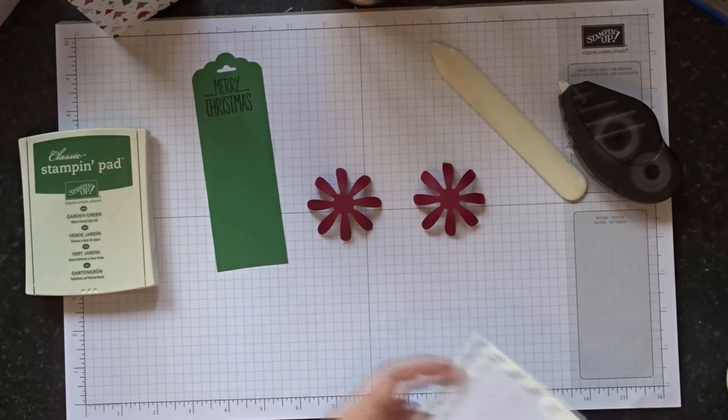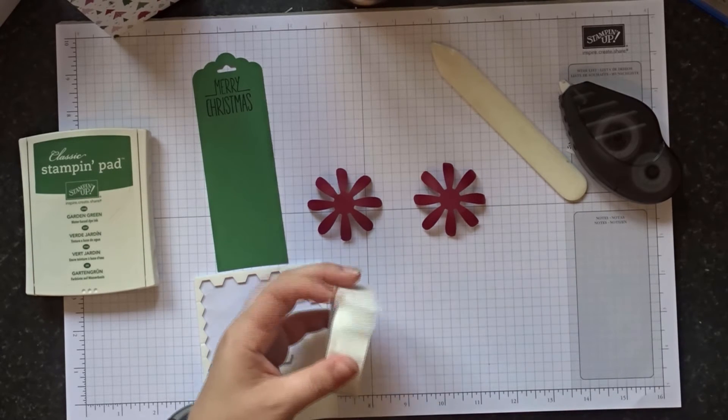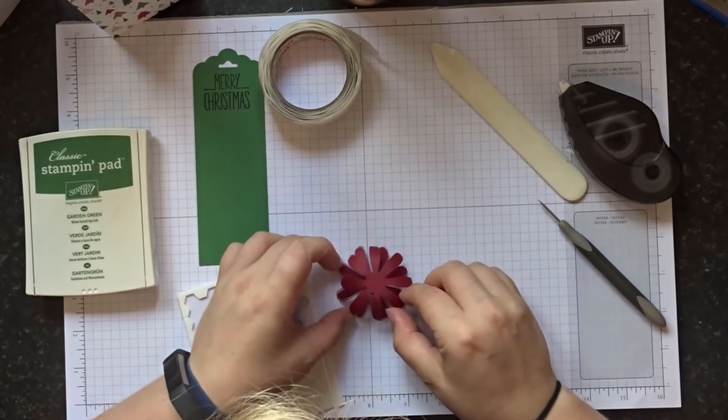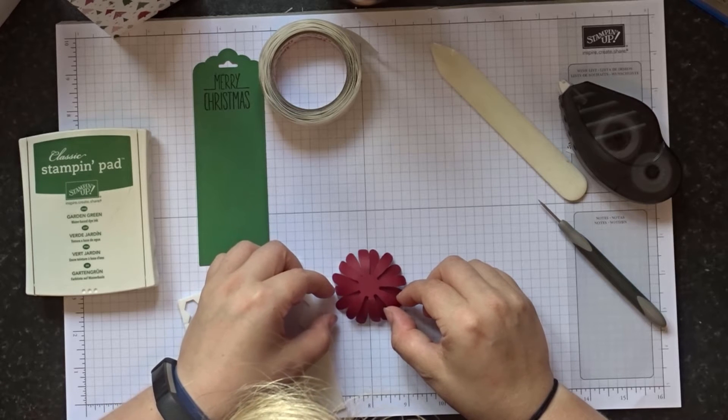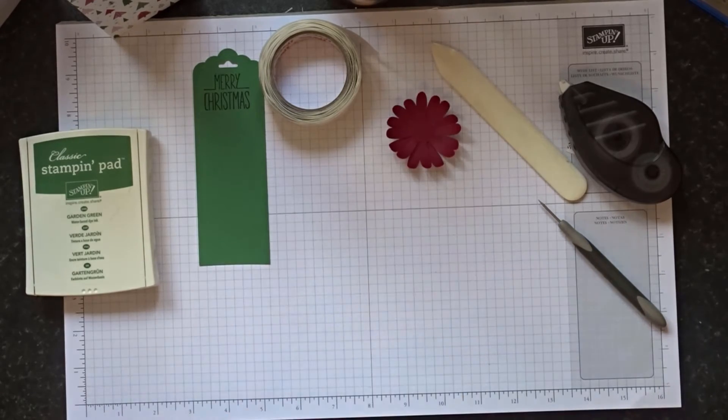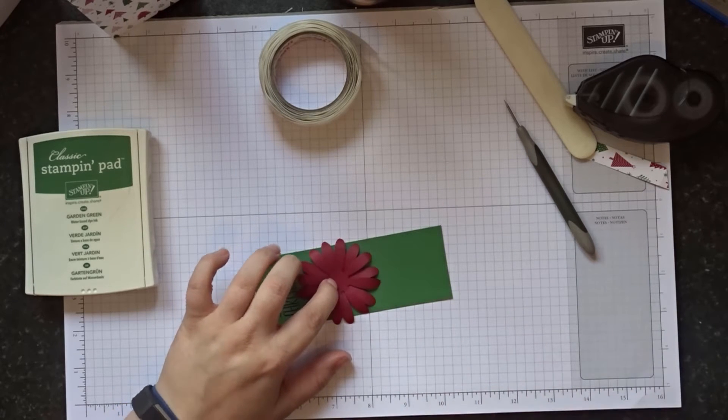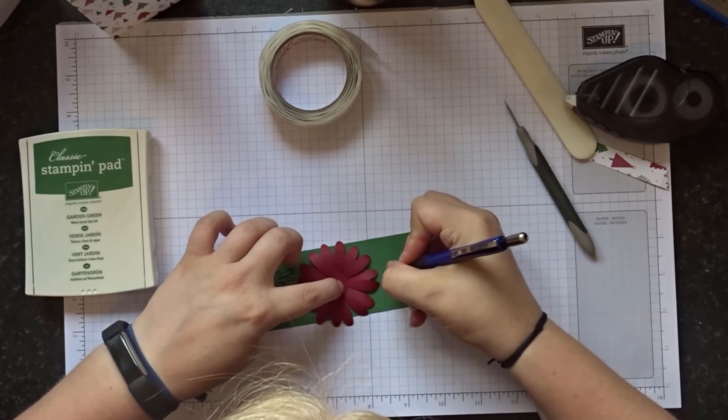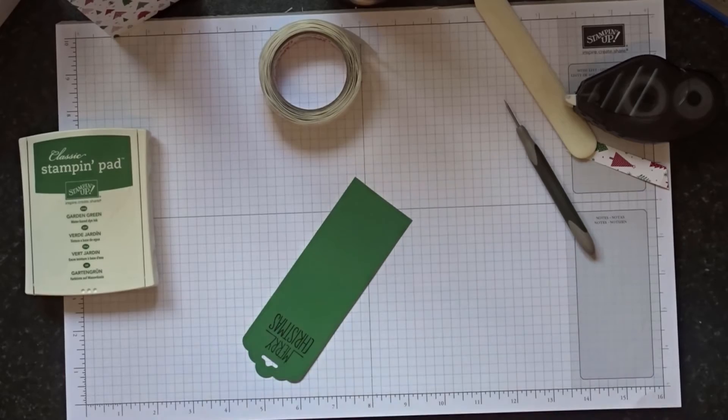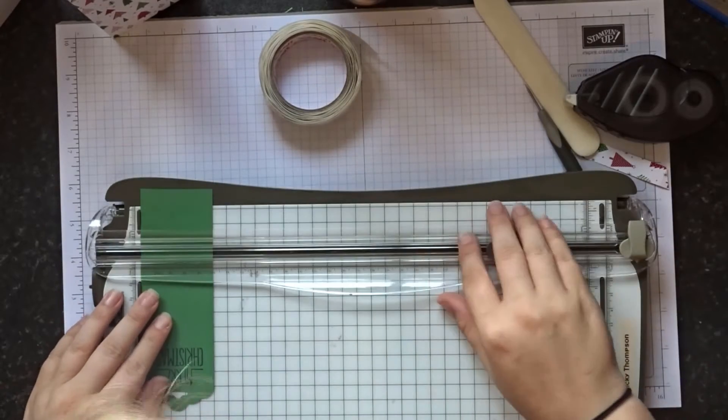So we're now going to stick those together. I've got some dimensionals here. In fact we'll use a glue dot to put them together actually. So we'll stick them together using a glue dot and then we will use a dimensional to stick it to the actual tag. Just line them up so they're opposites. And then we can see now how big our tag needs to be. I'm just going to grab a pencil and do a little mark. Somewhere here. Oh, I've dropped my flower. I'm going to grab the trimmer and just cut it roughly where you put your mark.